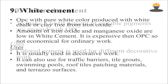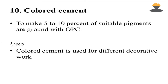Coloured cement is produced by adding 5 to 10% of a suitable pigment to OPC. It retains all the properties of OPC and is used for decorative purposes.